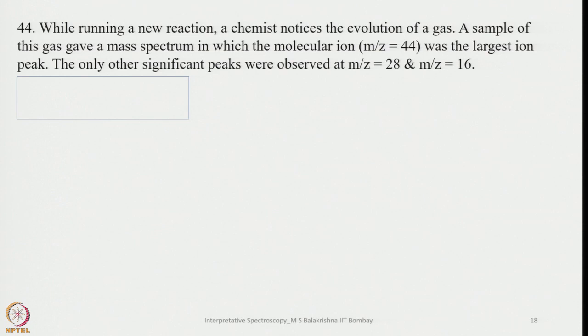Here's a problem: While running a new reaction, a chemist notices the evolution of a gas. A sample of this gas gave a mass spectrum in which the molecular ion M/Z equals 44 was the largest ion peak. The only other significant peaks were observed at M/Z equals 28 and M/Z equals 16. To begin with, let's examine this using rule number 13 and hydrogen deficiency. Divide 44 by 13: C3H5 is there, and evolution of a gas is there.